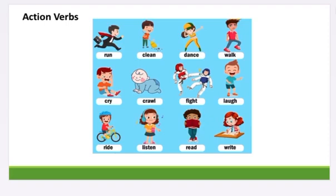Examples of action verbs: Number 1, run. Number 2, clean. Number 3, dance. Number 4, walk. Number 5, cry. Number 6, scroll. Number 7, fight. Number 8, love. Number 9, ride. Number 10, listen. Number 11, read. Number 12, write.